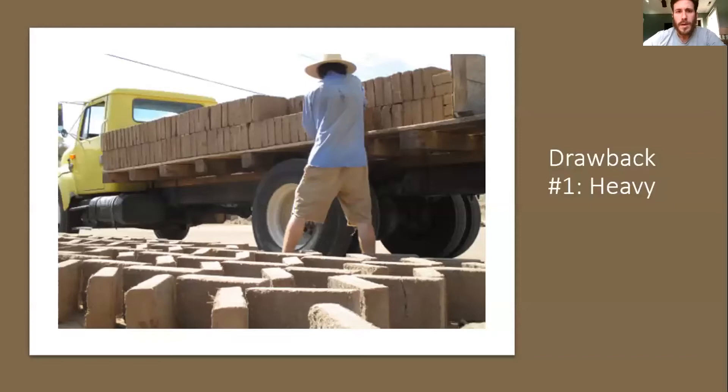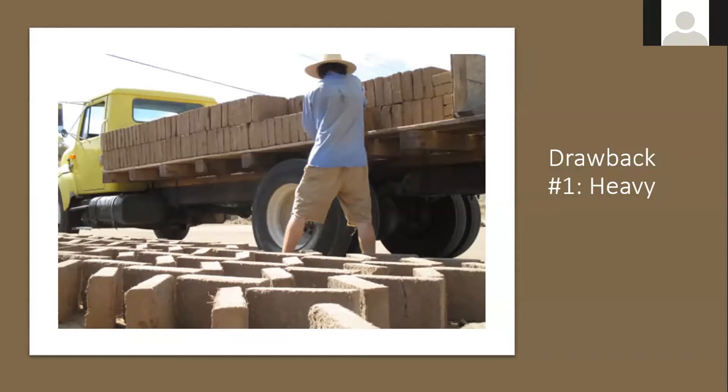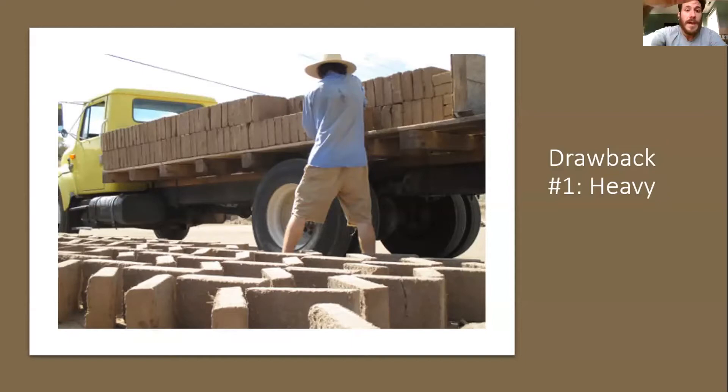Some drawbacks of building with adobe: obviously it's a very heavy material compared to working with standard brick. Larger adobe bricks commonly weigh 60 to 80 pounds, and there's a lot of associated manpower at every stage — from production to transportation to building. If there's demolition and remodeling, it's all heavy, hard work. There are significant labor costs involved.